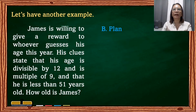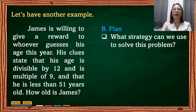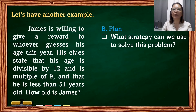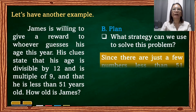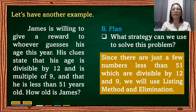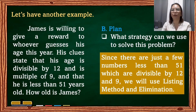Next is to plan. What strategies can we use to solve this problem? Since there are just a few numbers less than 51 which are divisible by both 12 and 9, we will use the listing method and elimination.